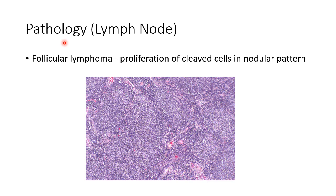In follicular lymphoma, the lymph node will show proliferation of cleaved cells in a nodular pattern. This picture shows the nodular pattern in follicular lymphoma.